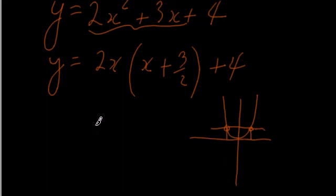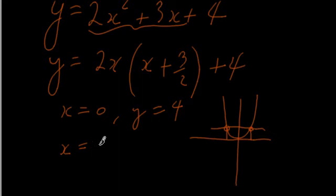So the first most easiest x value to choose here is x = 0. And when x = 0, we have y = 4. The next one we're going to choose is to make whatever is in these brackets equal to 0. So if we choose x = -3/2,